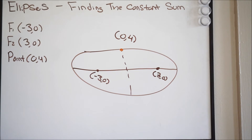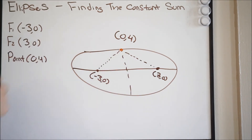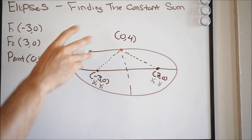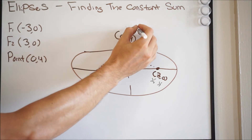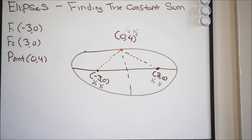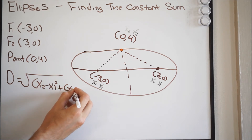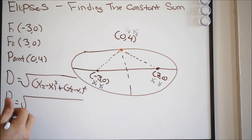To find the constant sum, we use the distance formula twice — once for each focus to the point — then add the results. The distance formula is the square root of (x2 minus x1) squared plus (y2 minus y1) squared. For distance one, using the focus at negative three comma zero and the point zero comma four: that's the square root of (0 minus negative 3) squared plus (4 minus 0) squared.